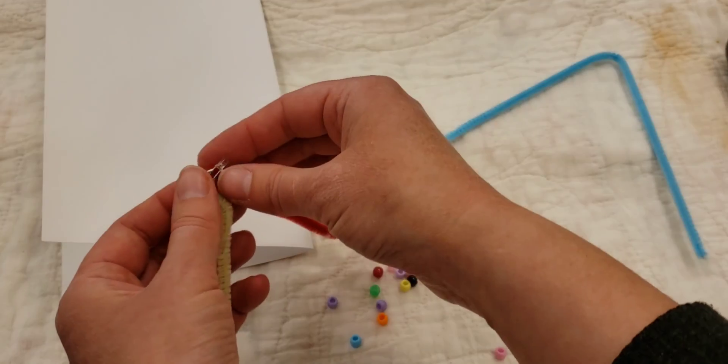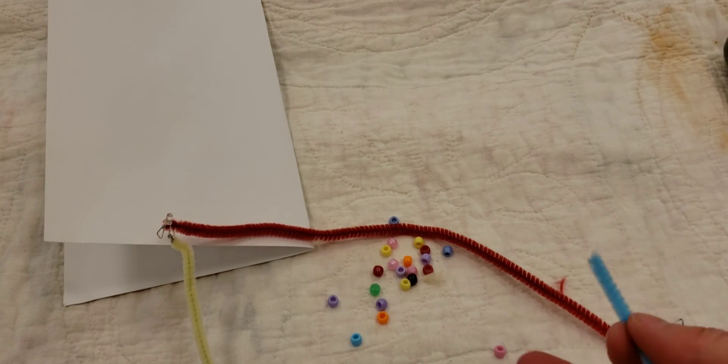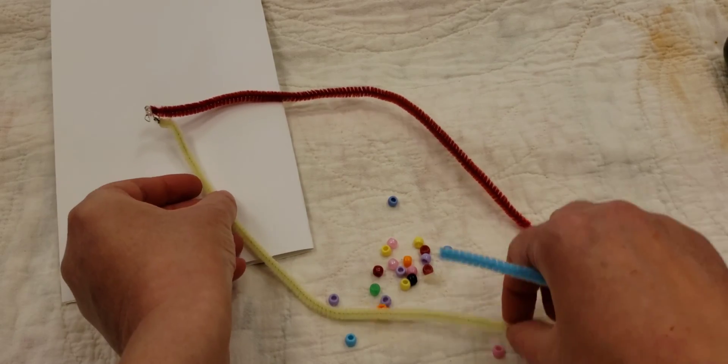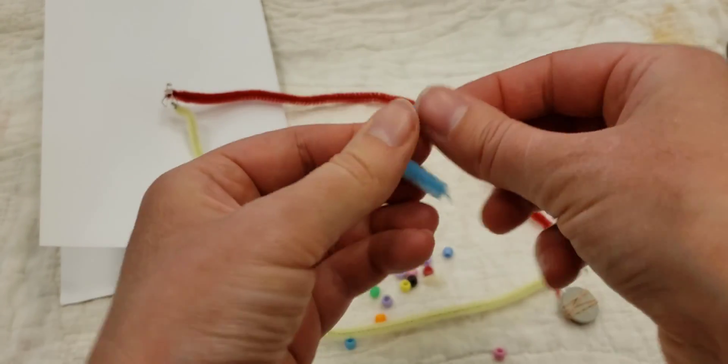And then comes the fun part. Decide what you are going to make. What type of shape you're going to do with your wire circuit. I am going to do a flower I think.